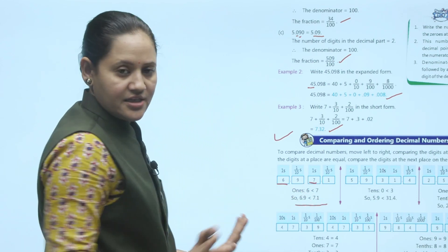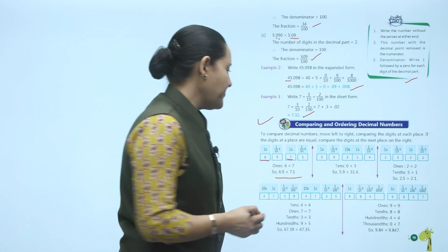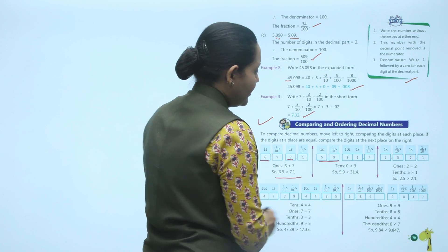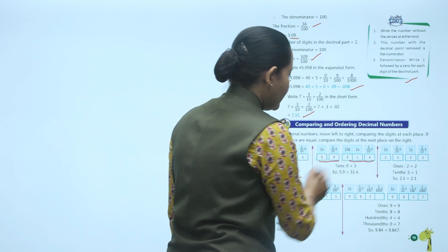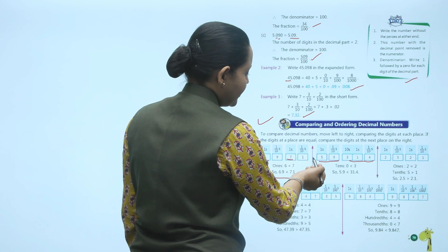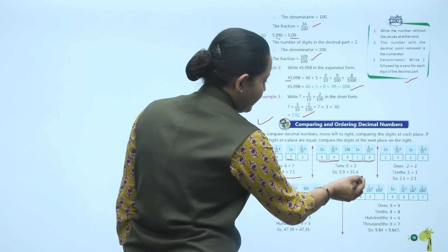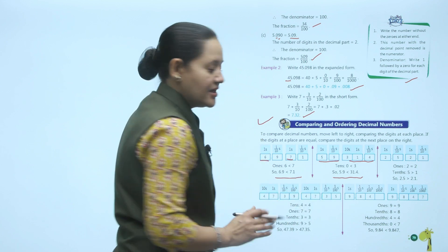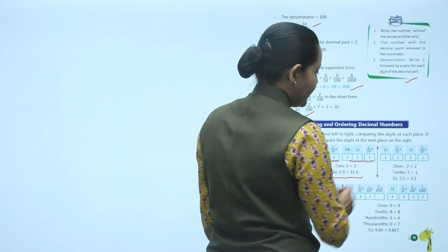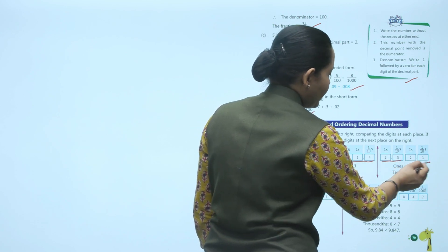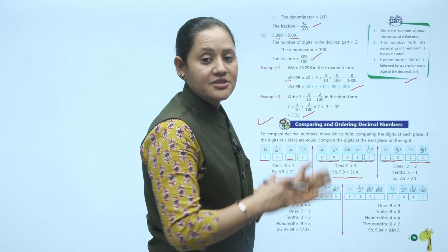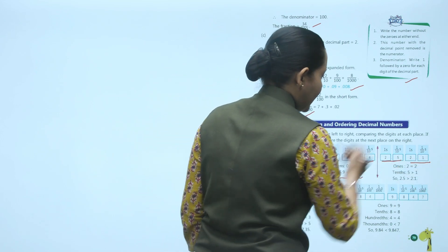Next: comparing 5.9 and 31.4. Looking at the tens place, 31.4 has 3 in the tens place and 5.9 has 0, so 31.4 is greater than 5.9. Next: comparing 2.5 and 2.1. Both have 2 in the ones place, so we compare the tenths: 5 vs. 1, so 2.5 is greater than 2.1.